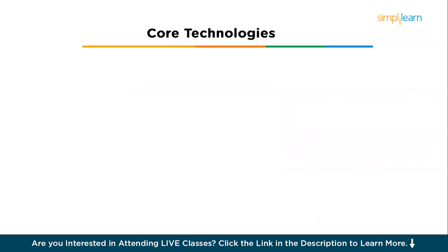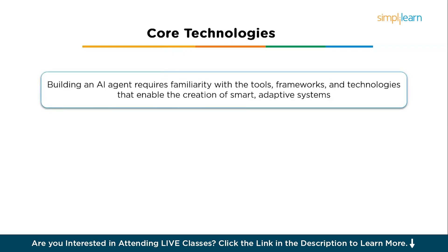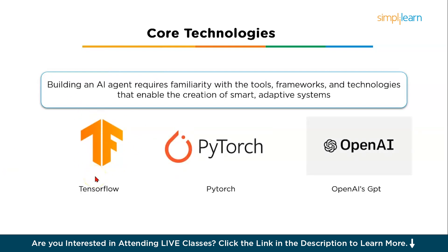Building an AI agent requires familiarity with tools, frameworks, and technologies. TensorFlow is a powerful open-source framework primarily used for deep learning, ideal for building AI models requiring significant data and complex computations. PyTorch is another popular open-source framework preferred by researchers for building dynamic neural networks, known for its flexibility and ease of use in deep learning.